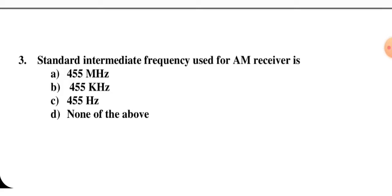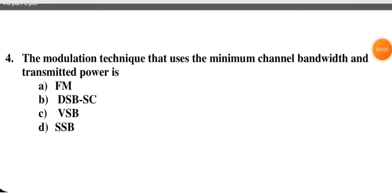Standard intermediate frequency used for an AM — amplitude modulated — receiver is 455 MHz, 455 kHz, 455 Hz, or none of the above. The right answer is 455 kilohertz, meaning B is the correct answer.